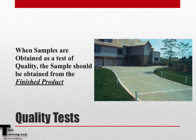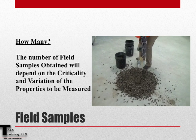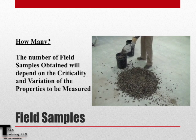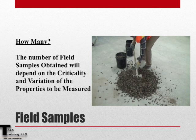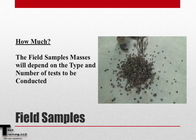When samples are being obtained for quality tests, it is best whenever possible to obtain that sample from the finished product. The number of samples obtained will depend upon the criticality and variation of the properties that are to be measured. Furthermore, the amount of each sample will depend upon the type and number of tests that are to be conducted.